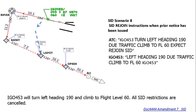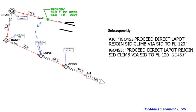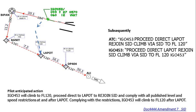Scenario eight — SID rejoining instructions when prior notice has been issued. ATC says 'IFly 453, turn left heading 100, due traffic, climb to flight level 60, expect to rejoin SID.' The pilot keeps the SID in the FMS and awaits further instructions. Subsequently, ATC says 'IFly 453, proceed direct to LAPAUT, rejoin SID, climb by SID to flight level 120.' The pilot tunes LAPAUT in the FMS, proceeds direct, and follows all SID restrictions from LAPAUT onwards.